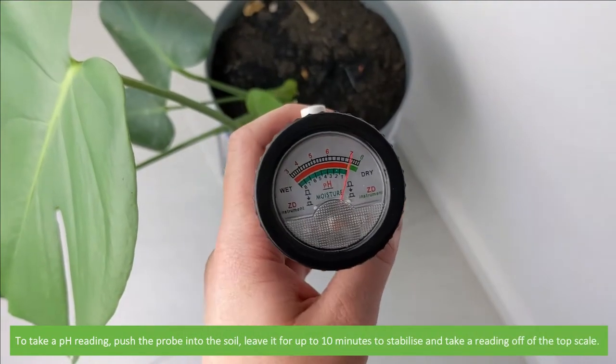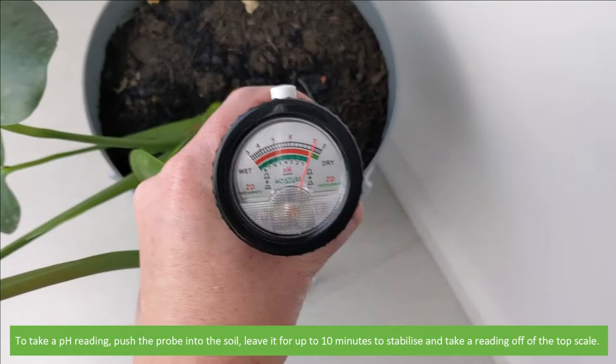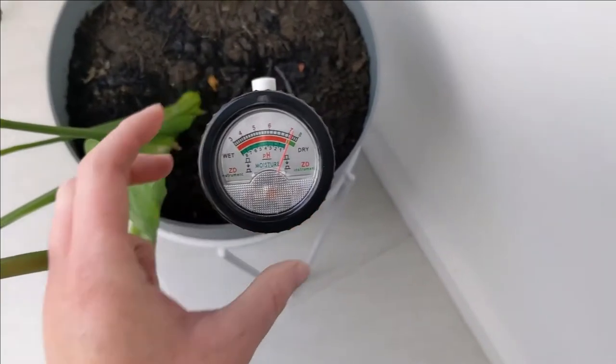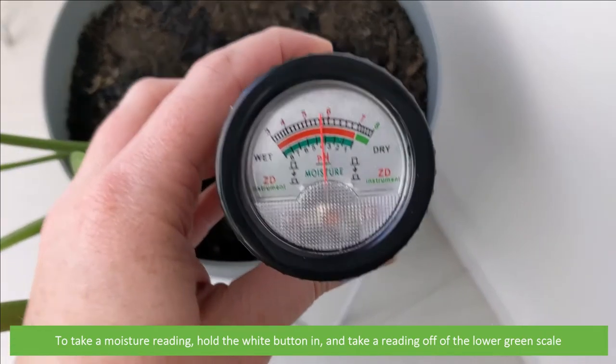To take a pH reading, push the probe into the soil, leave it for up to 10 minutes to stabilise, and take a reading off the top scale. To take a moisture reading, hold the white button in, and take a reading off the lower green scale.